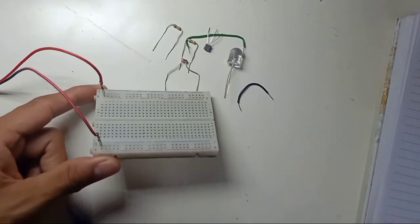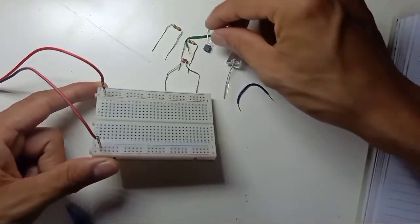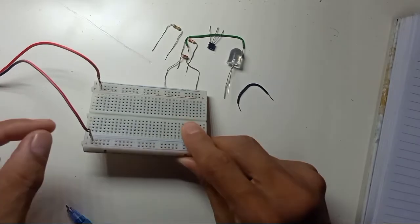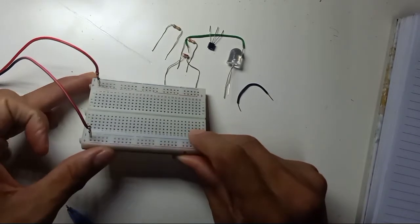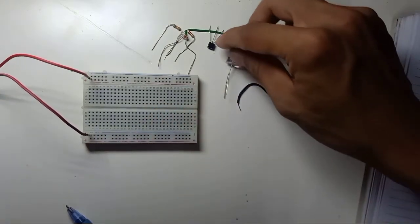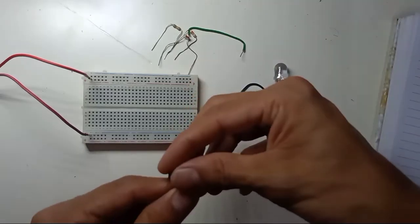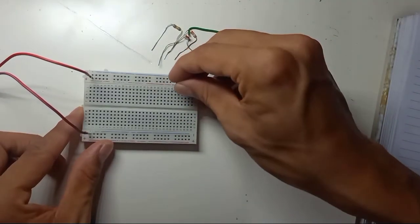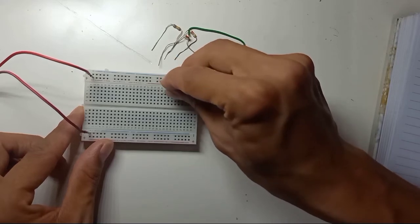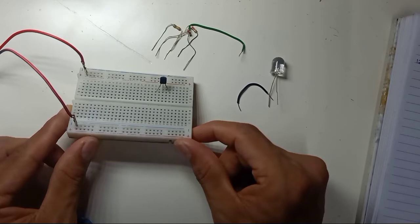Right here, this is my breadboard. So once you place the breadboard, here is positive beam, here is the negative. Positive power supply, negative power supply. So the first thing, what I do is, I place the transistor. I put the transistor first.